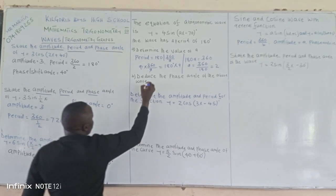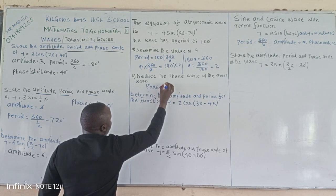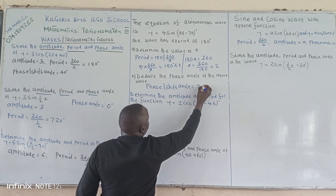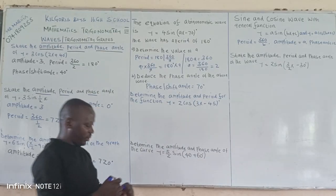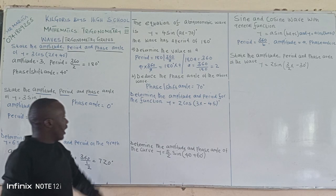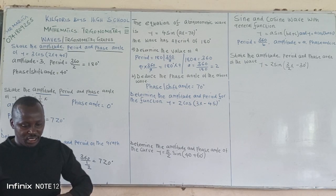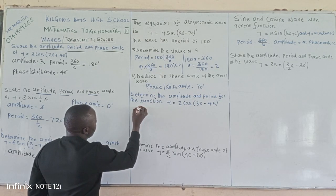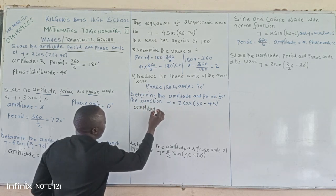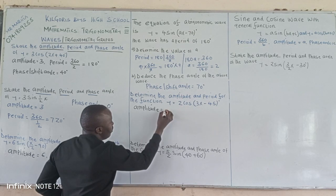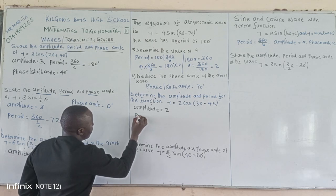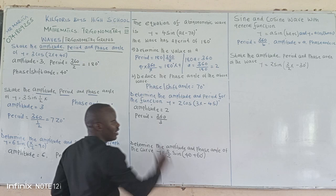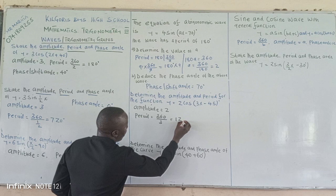The first angle, or shift angle, is equivalent to 70 degrees — don't say negative 70, just say 70 degrees. Next, to determine the amplitude and the period of the function: the amplitude is equal to 2. The period is 360 divided by the coefficient of x, which is 3, giving us 120 degrees.